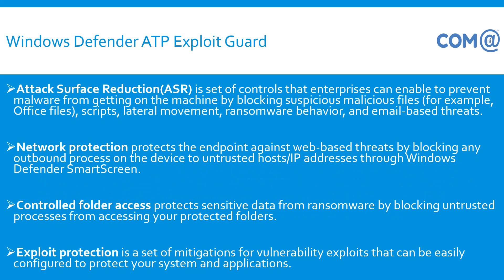Attack surface reduction has controls that an enterprise can enable to prevent malware from getting into the machine by blocking suspicious files, scripts, ransomware behavior, or email-based threats. Network protection protects endpoints against web-based threats by blocking any outbound process from your machine to an untrusted IP address.